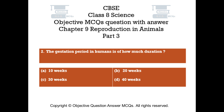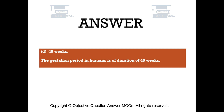Question number 2. The gestation period in humans is of how much duration? Option A: 10 weeks. Option B: 20 weeks. Option C: 30 weeks. Option D: 40 weeks. The right answer is option D — 40 weeks. The gestation period in humans is a duration of 40 weeks.